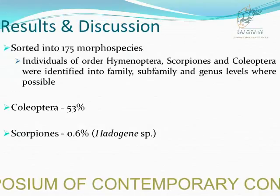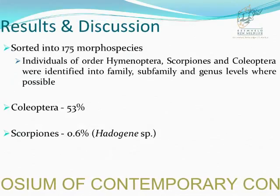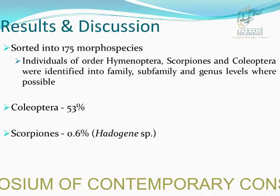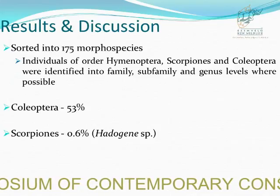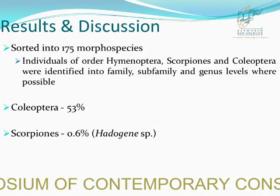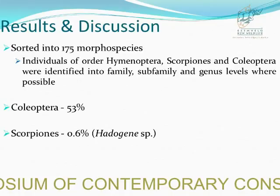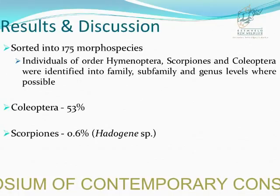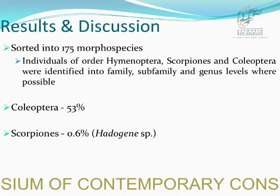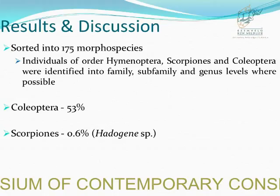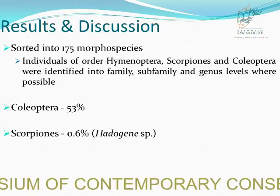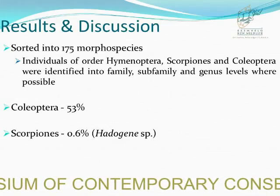Those specimens were further sorted into 175 morphospecies. Individuals of Order Hemiptera, Scorpiones, and Coleoptera were further identified to family, subfamily, and genus level where possible. Order Coleoptera had the highest species richness, while Scorpiones had the lowest.